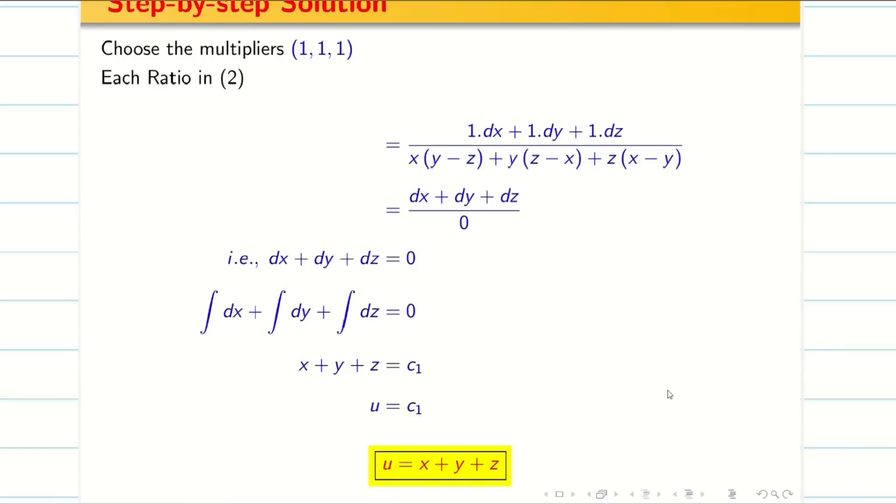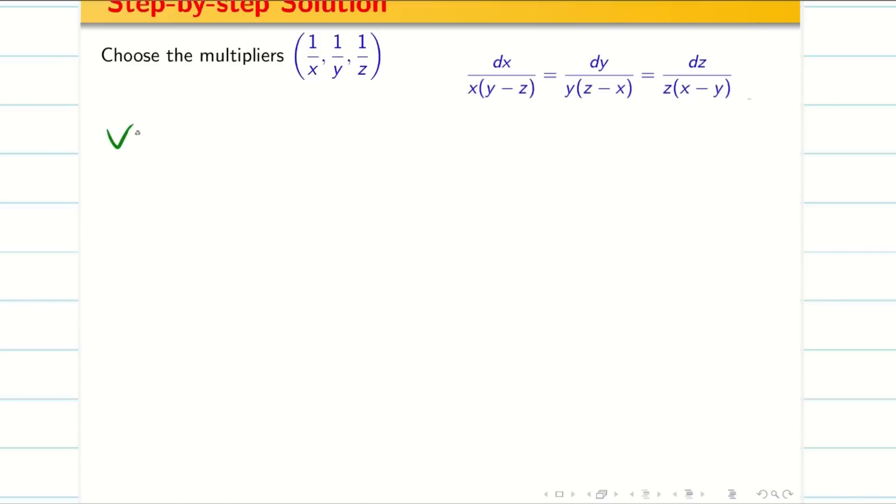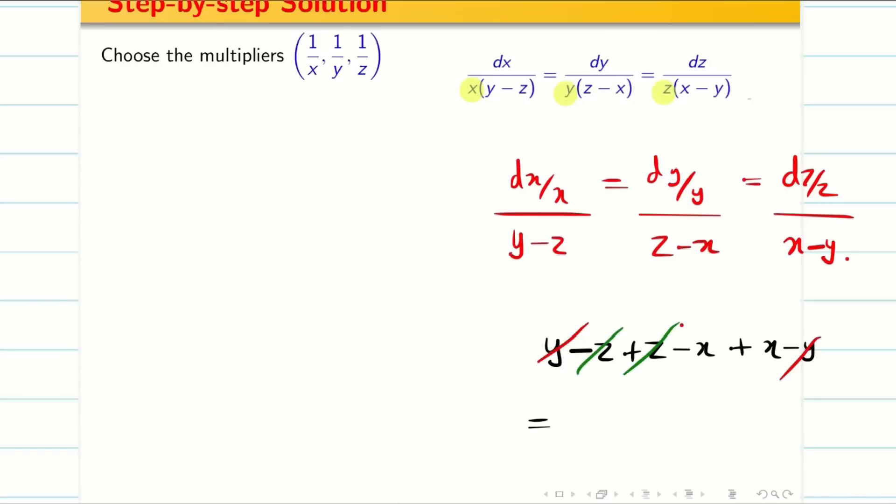Now we have to find v. Just see the auxiliary equation. If xyz goes to numerator, then my denominator will have only y-z, z-x, x-y. If I add y-z + z-x + x-y, this gets cancelled. y cancels, z cancels, and x cancels, I get zero. So the multipliers are 1/x, 1/y, 1/z.